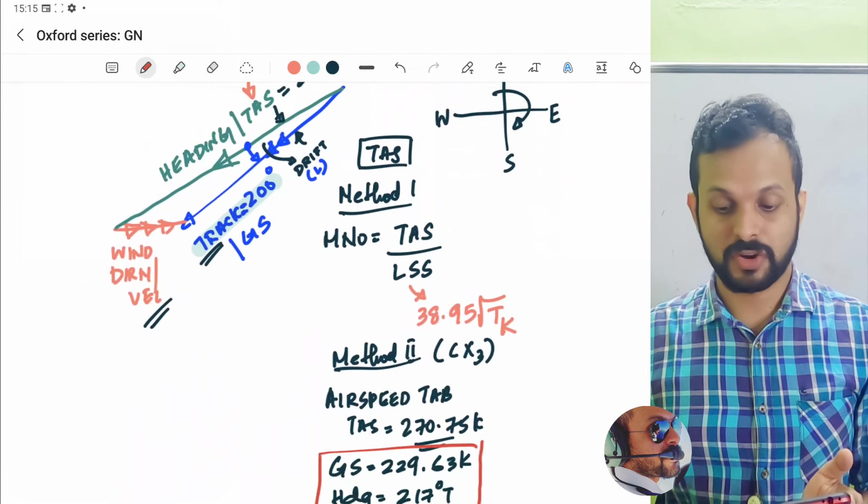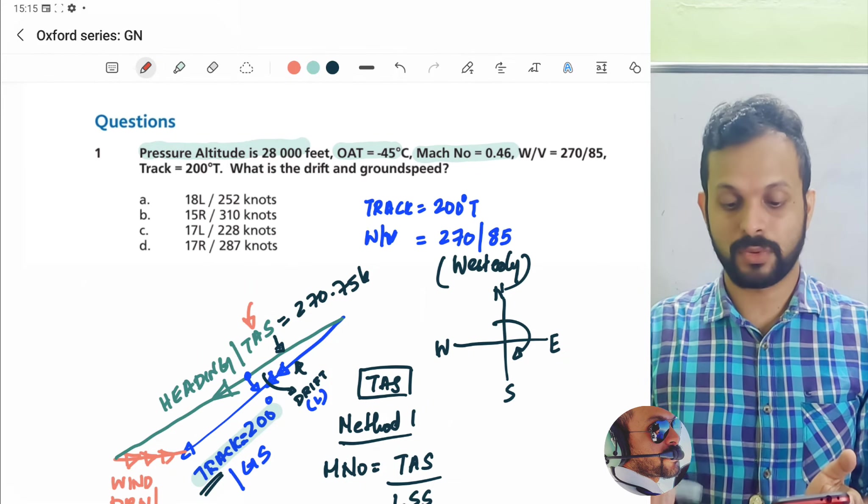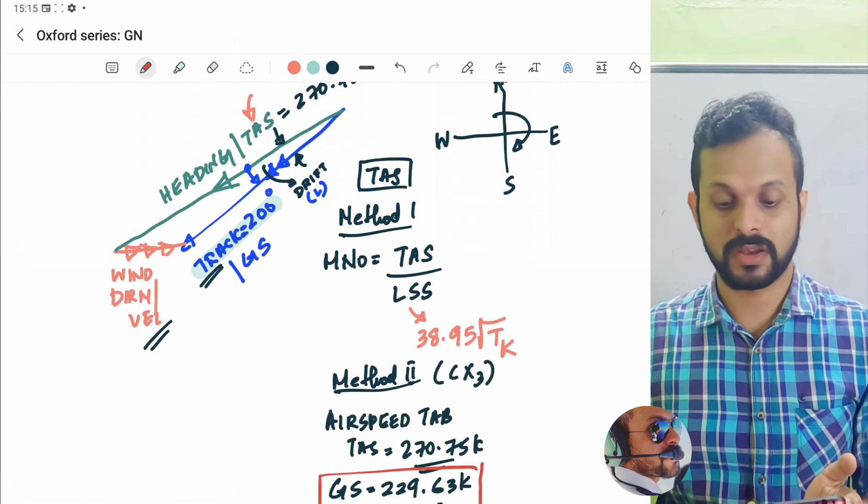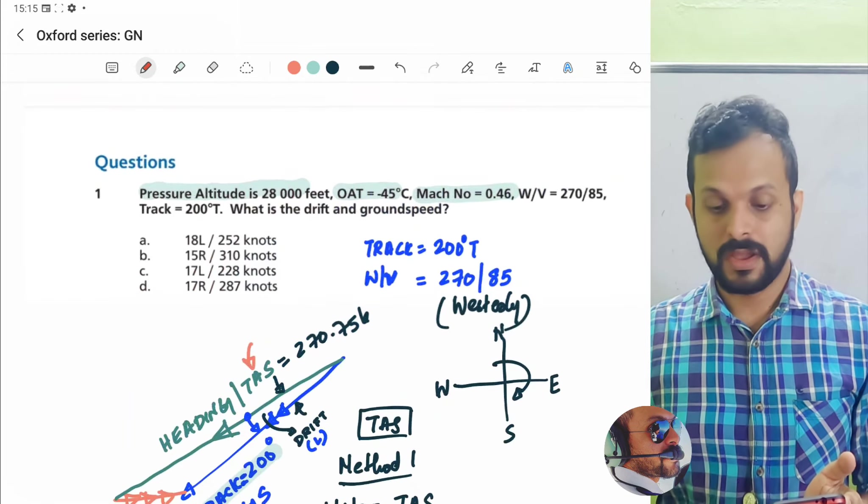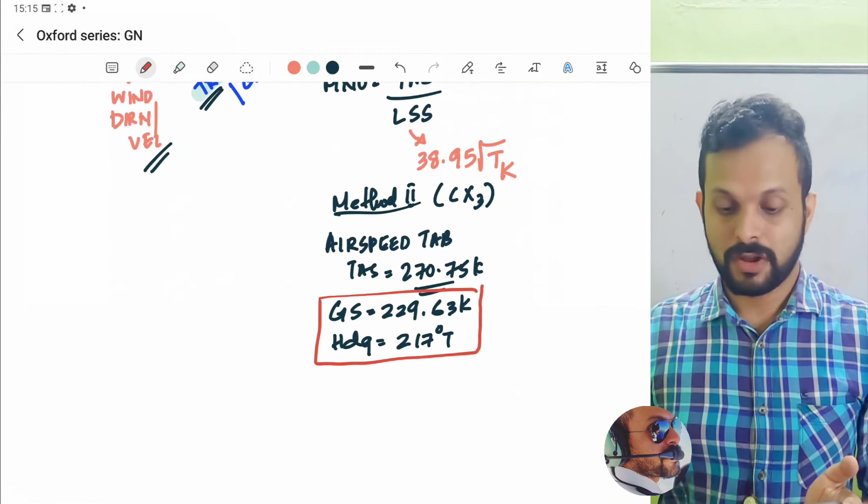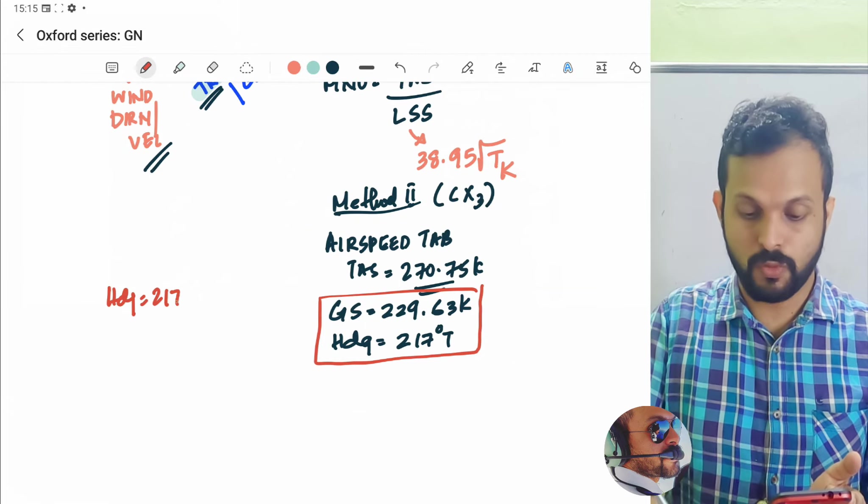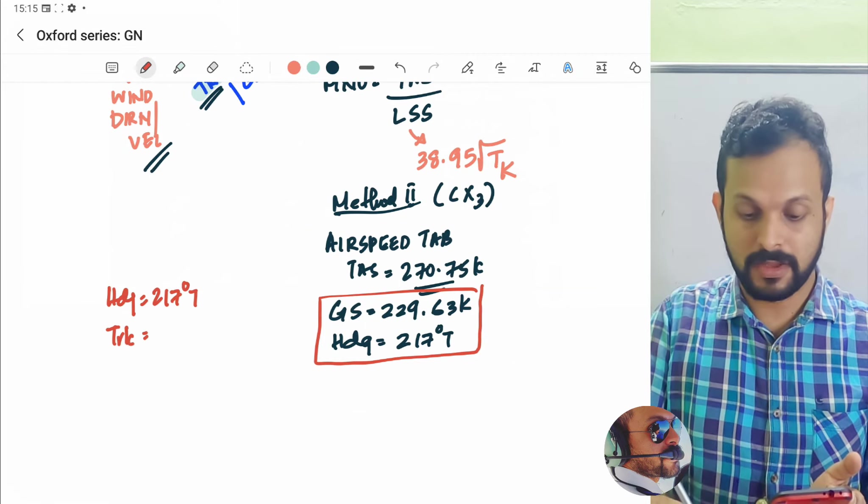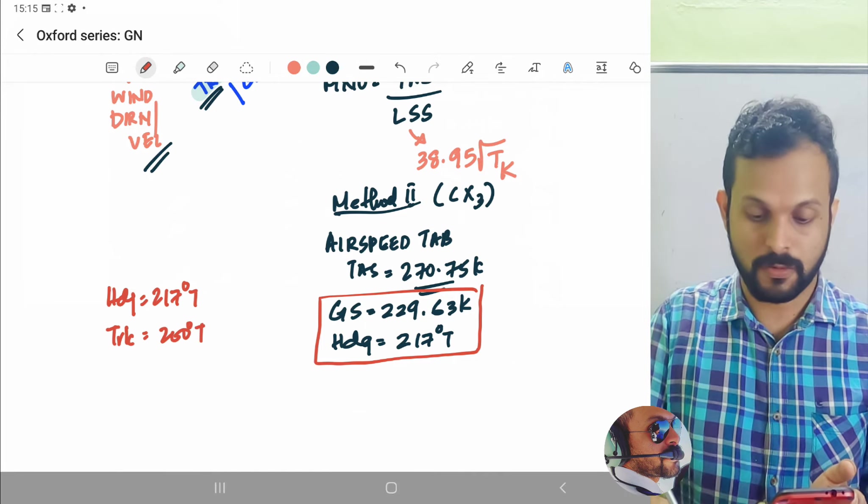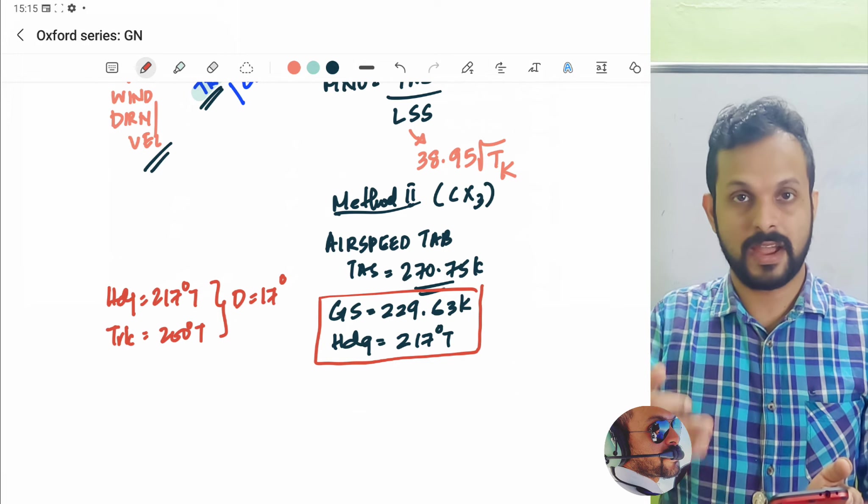Now, ground speed is definitely asked in the question. The ground speed of 229 is approximately 230. You can look at options A, alpha, bravo, charlie and delta and pretty clear that charlie is the answer because the ground speed is 228 pretty much close to the answer which we got here. Now, they're asking you to find out not the heading but the drift but indirectly we have found out the drift itself. Now, we have a heading here of 217 degrees true and we have the planned track of 200. Now, that will immediately give you the drift. The drift is going to be 17 degrees. That is the angle between the heading and the track.